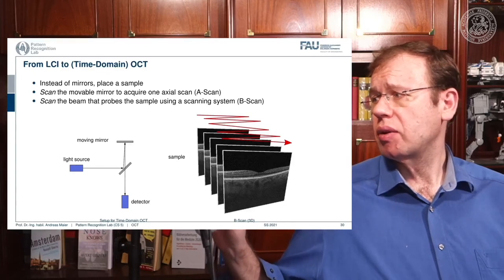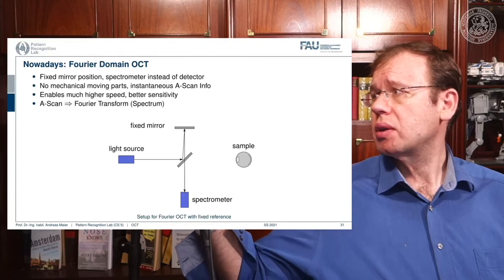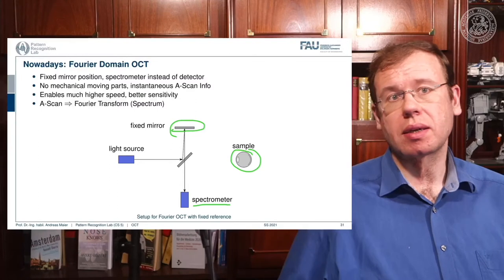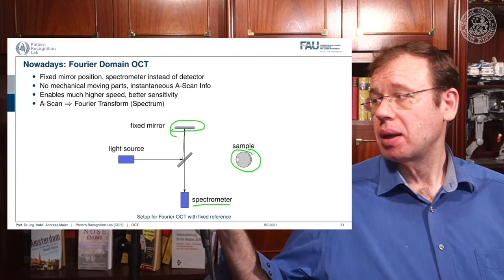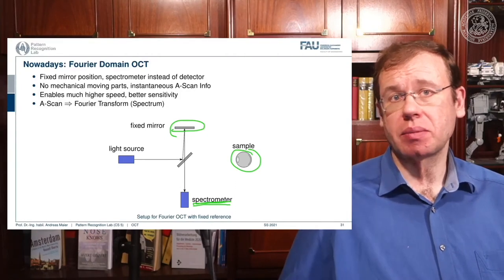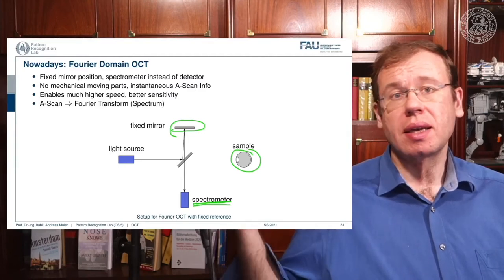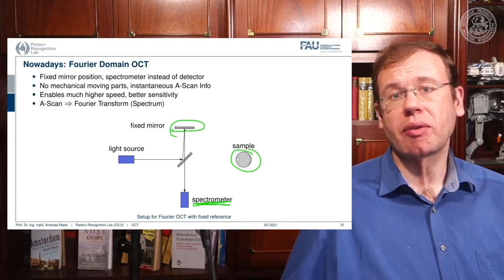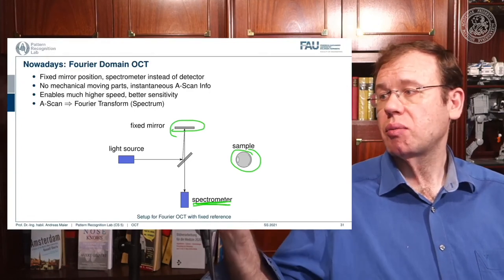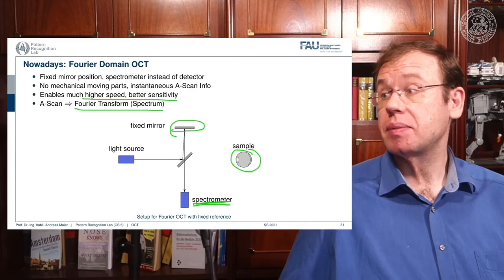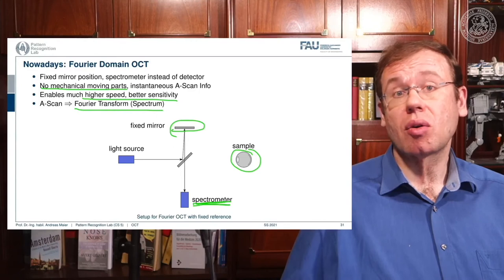Time domain OCT takes a little long and is not so efficient. This is why Fourier domain OCT is used: here you use a fixed mirror and a spectrometer. You analyze the spectrum of the single pulse sent in, measuring one A-scan with a single spectral measurement. If you need 1000 steps for an A-scan and can measure 1000 values at once with the spectrometer, you achieve a speed-up of a factor of 1000. The A-scan is obtained after a Fourier transform, since we're acquiring the Fourier transform of the desired depth profile. There are no mechanical moving parts, making the system more robust.